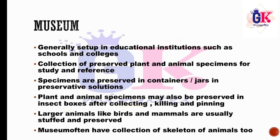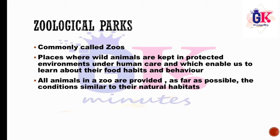Next, Zoological Parks — commonly called zoos. Wild animals are preserved in a controlled environment under human supervision, rather than in their natural habitat. This enables us to learn about their food habits and behavior. All animals in a zoo are provided, as far as possible, conditions similar to their natural habitats — that is why they create a similar environment.